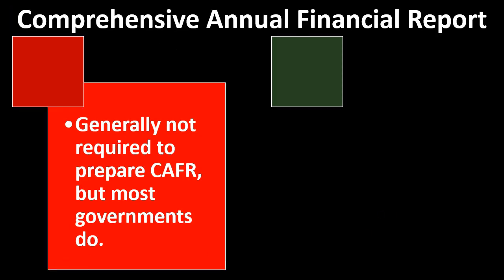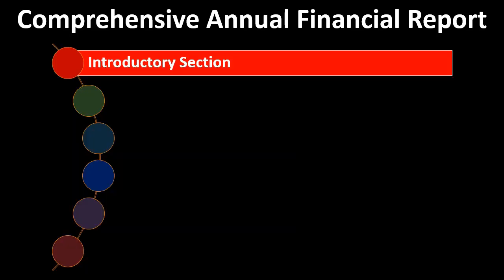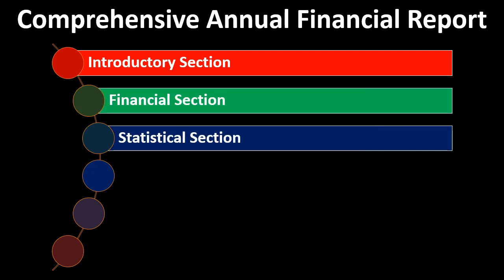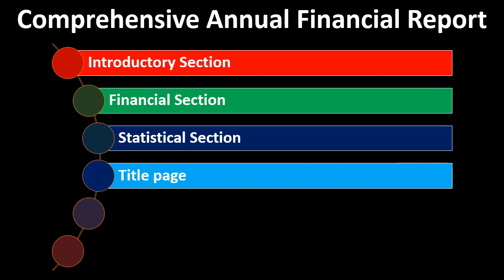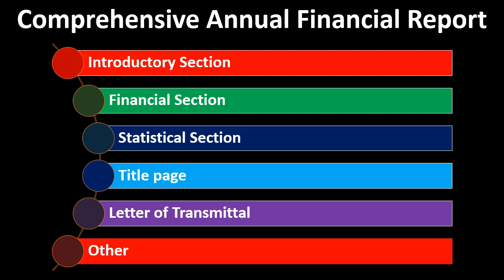Now we turn to the Comprehensive Annual Financial Report, or CAFR, which goes above and beyond the minimum requirements discussed so far. It is generally not required, but most governments do prepare it. CAFRs are prepared in conformity with GASB standards and typically include an introductory section, a financial section, a statistical section, a title page, a letter of transmittal, and other sections.